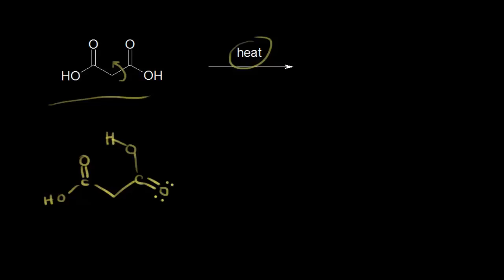In this mechanism, we're actually going to form a bond between this oxygen and this proton, and it's a cyclic mechanism. So if these electrons in here move into here, that's going to push these electrons into here, and then these electrons are going to form the bond between the oxygen and the hydrogen. Let's go ahead and show the result of our cyclic mechanism.